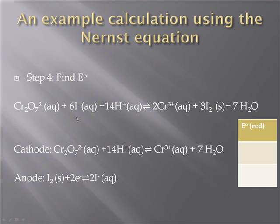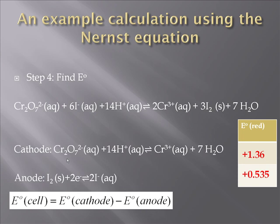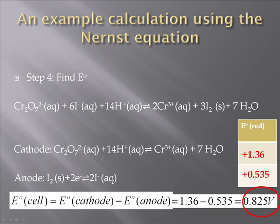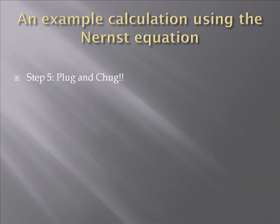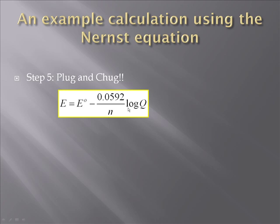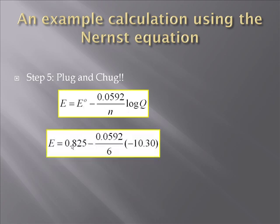We need to find E naught, so we look up these processes in a table as written as reductions. The standard cell potential is calculated as the standard cell potential of the cathode minus the standard cell potential of the anode, giving positive 0.825 volts. We're not at standard conditions, so we use the Nernst equation. We have Q, log Q, E naught, and N equals 6. Plugging everything in, we get positive 0.93 volts.